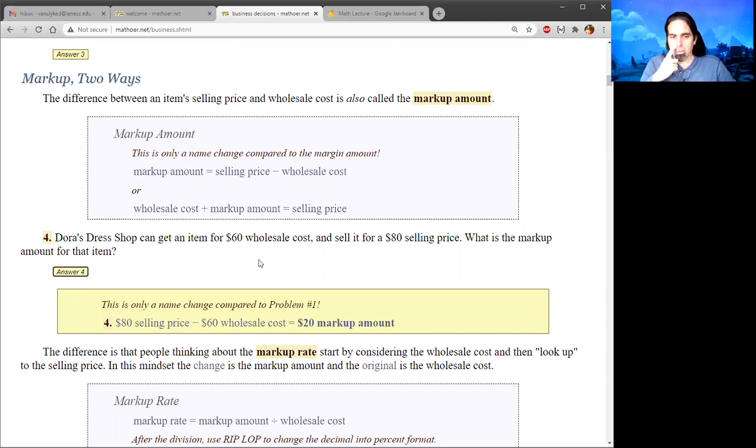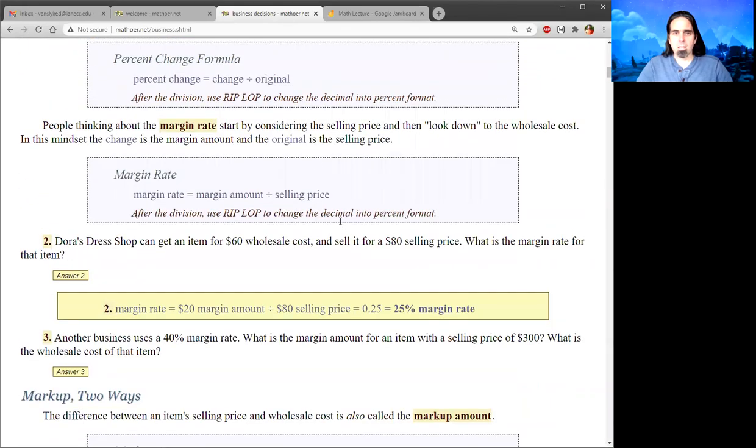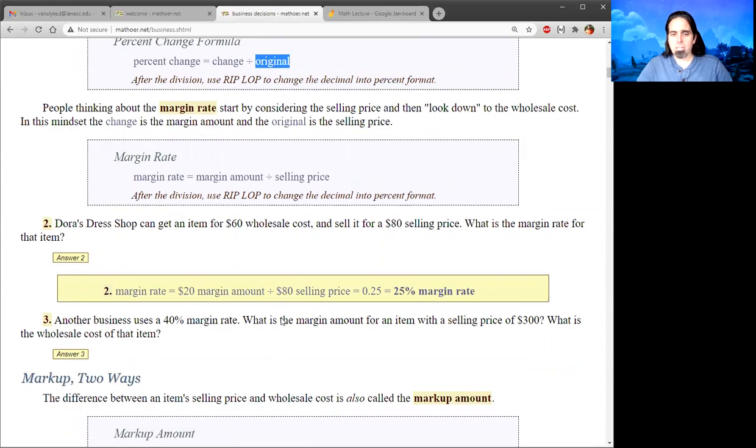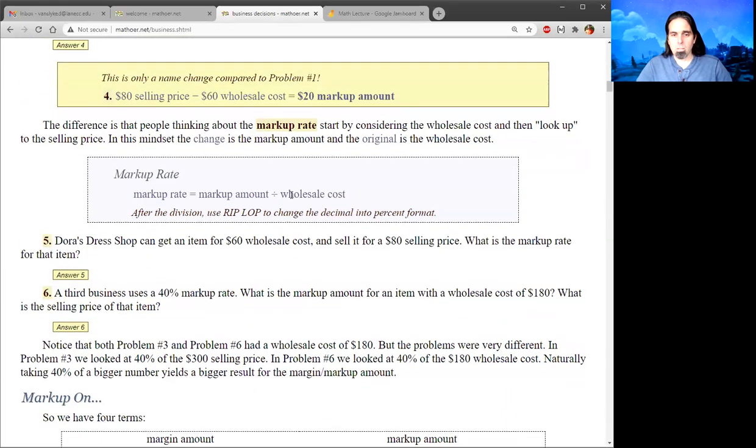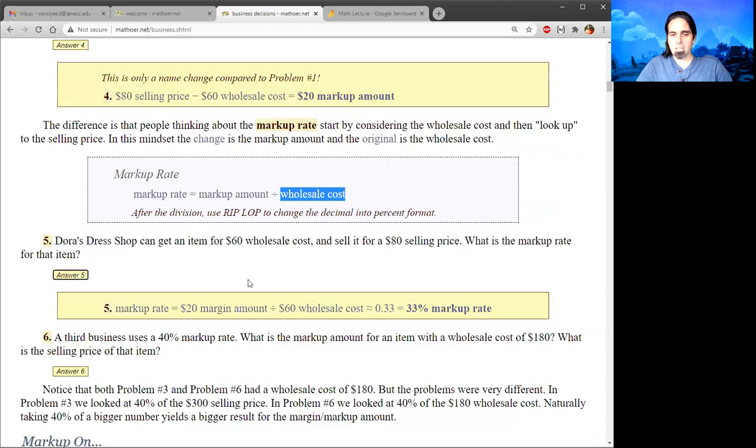What will change is the rate. The rate was change divided by original. So people with the markup mindset say that the original is not the selling price, but instead the wholesale cost. So their change divided by original will be the markup amount, which is also the margin amount, divided by this time the wholesale cost. So before we were saying 20 divided by 80, but now we're going to do 20 divided by 60. So that same $20 now is called the 33% markup rate, even though it was a 25% margin rate.